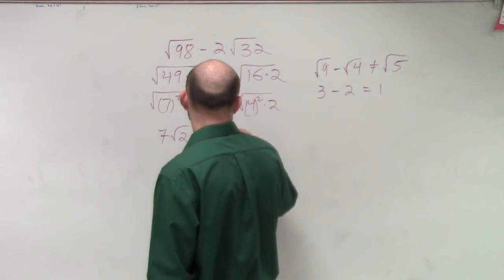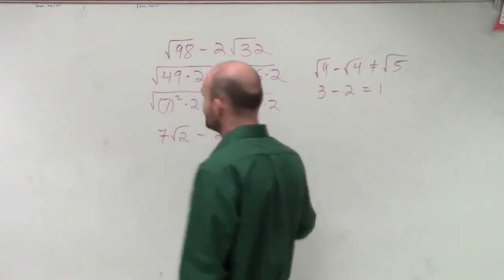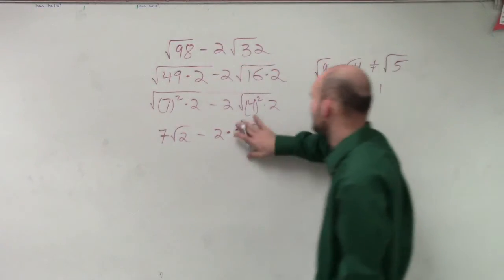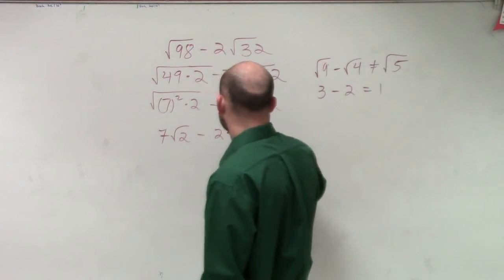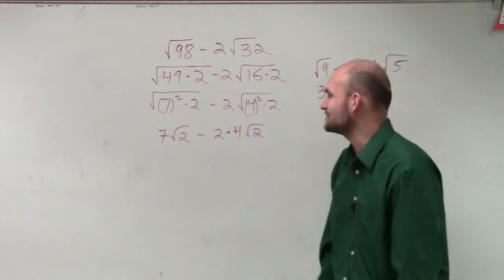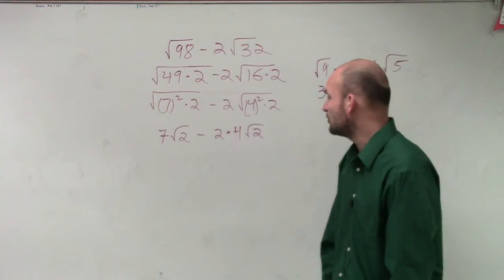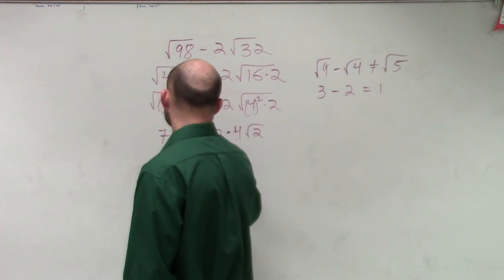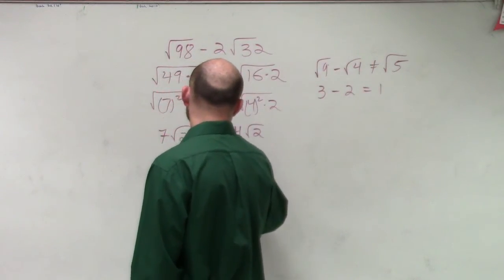Ah, jeez. Sorry. No, it's 4. Today is just being a little rough with me. So we have 7 square root of 2 minus 2 times 4 times square root of 2. So it's 7 square root of 2 minus 8 square root of 2.